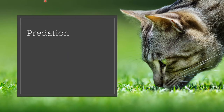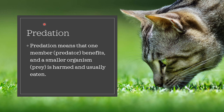Another type of association between organisms is predation. When we say predation, it means that one member, the predator, benefits, and a smaller organism, the prey, is harmed and usually eaten. An example of this is the relationship between cats and mice — the cat serves as the predator and the mouse is the prey.